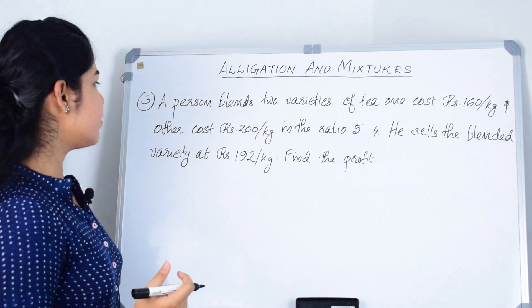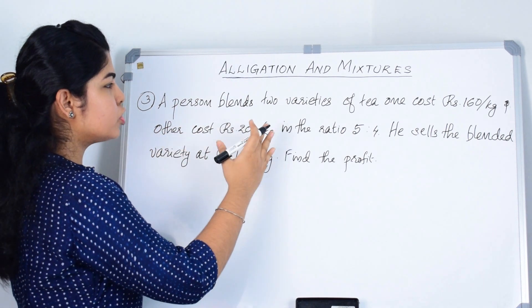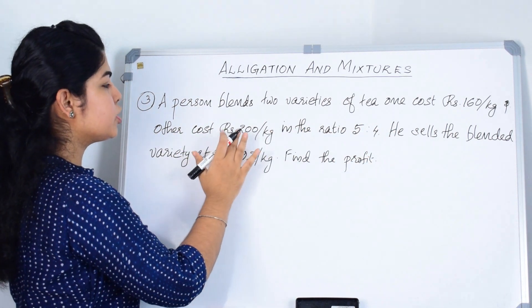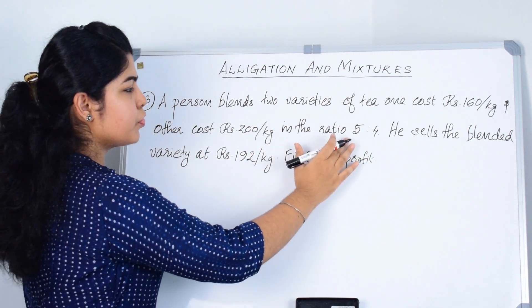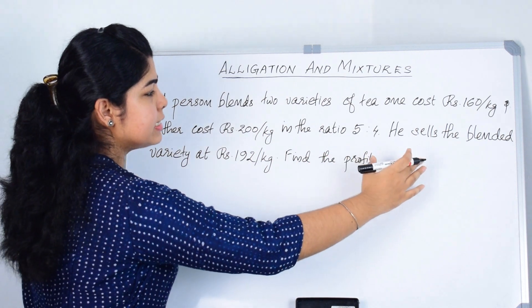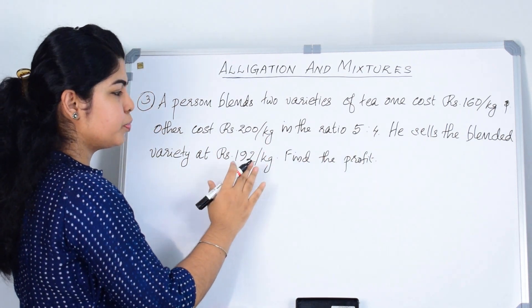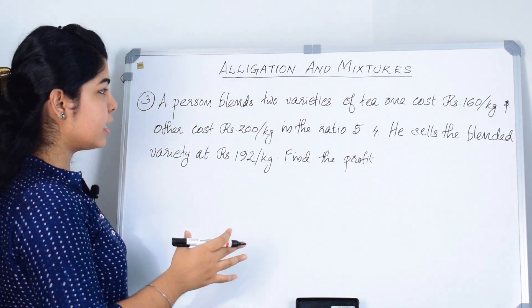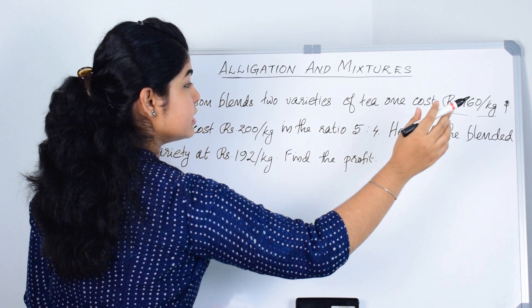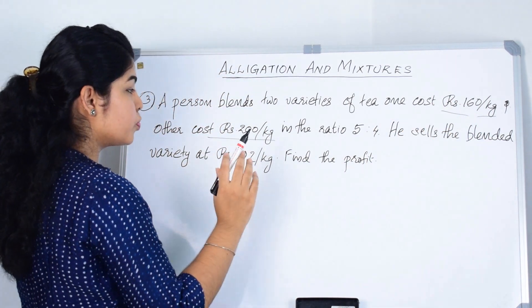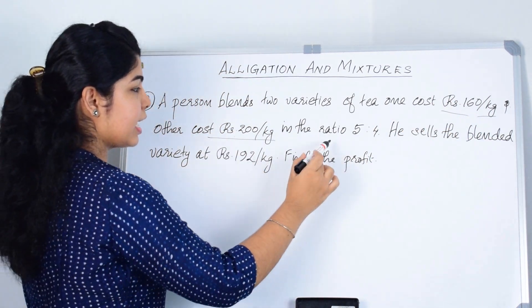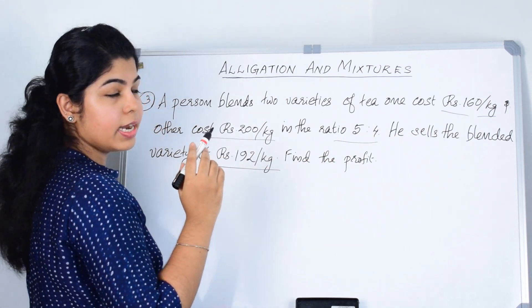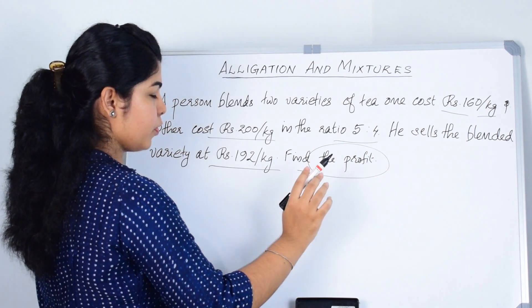Now we will solve another example. A person blends 2 varieties of tea — one costing Rs. 160 per kg and another costing Rs. 200 per kg — in the ratio 5 is to 4. He sells the blended variety at Rs. 192 per kg. Find the profit.